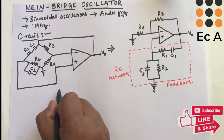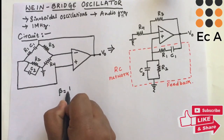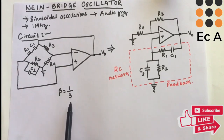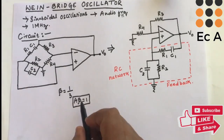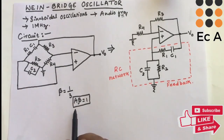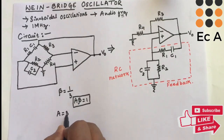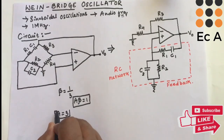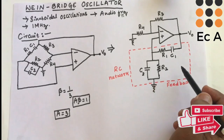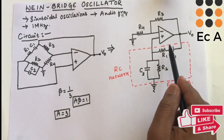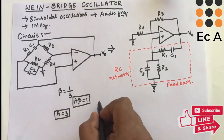For this circuit, beta is equal to one-third. To satisfy the Barkhausen criterion, the condition A·β = 1 must be met, so the gain A should be equal to 3.